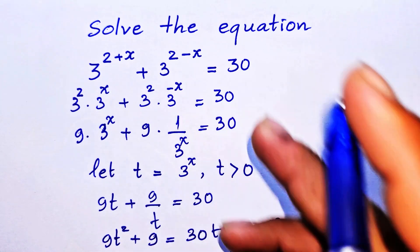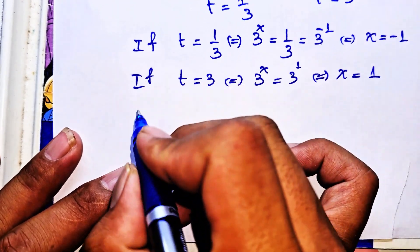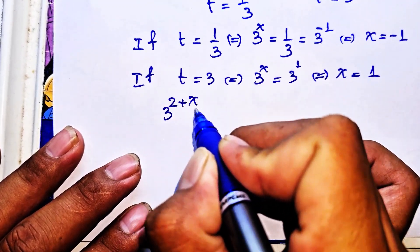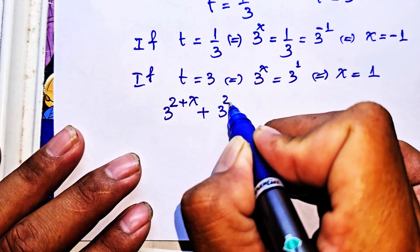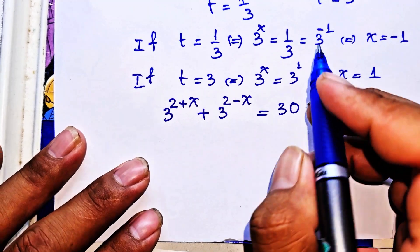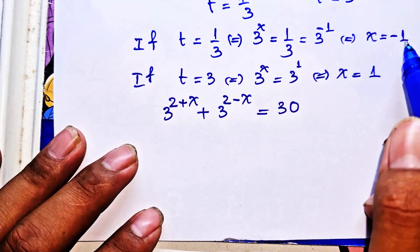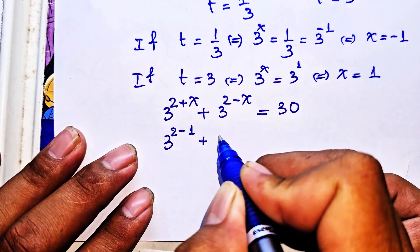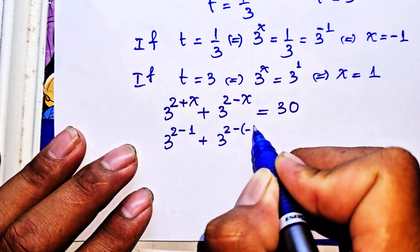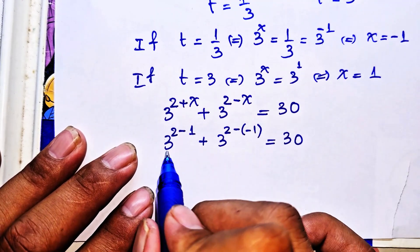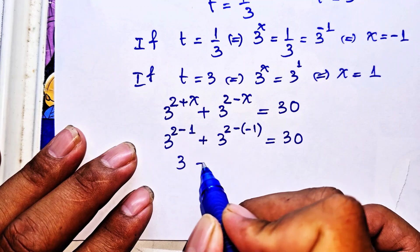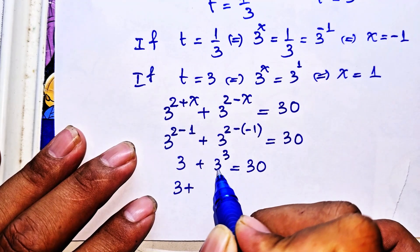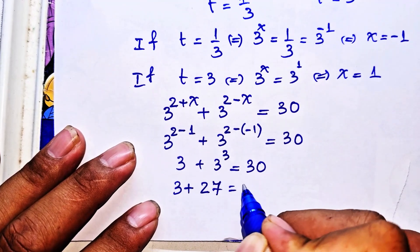Now we verify our answers by substituting back into the original equation 3^(2+x) + 3^(2−x) = 30. For x = −1: 3^(2−1) + 3^(2+1) = 3^1 + 3^3 = 3 + 27 = 30. This is true.